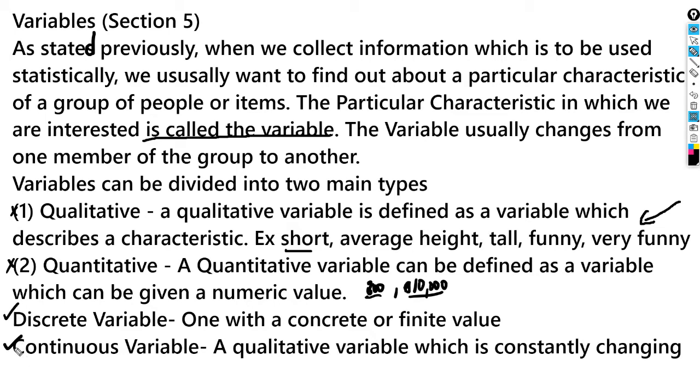These two definitions are also important. CXE would want you to know the difference. A discrete variable is one with a concrete or finite value, like one thousand US dollars. A continuous variable is a qualitative variable which is constantly changing.